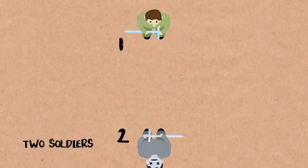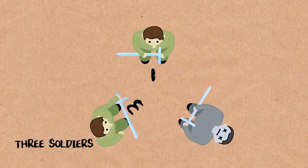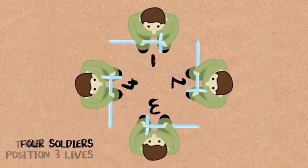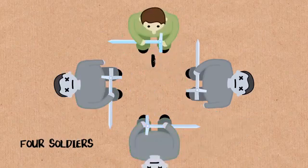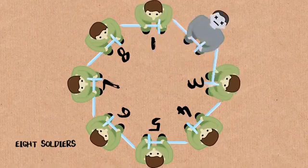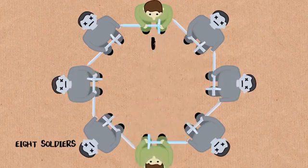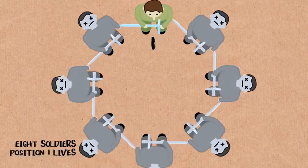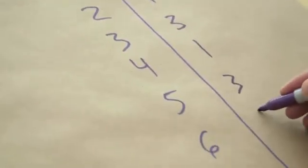And maybe we're getting some glimmers of other patterns. But before I really try to phrase those, I'd like to fill in the table a little bit more. So if there's only one person, that person's the winner, so that one is easy. There's two people, one kills two, one's the winner. If there's three people, one kills two, three kills one, three's the winner. If there's four people, one kills two, three kills four, one kills three. If there's eight people, one kills two, three kills four, five kills six, seven kills eight. One kills three, five kills seven. One kills five, winner is one. So it was one, one, three, one, three, five, seven, one, three, five, seven, nine.